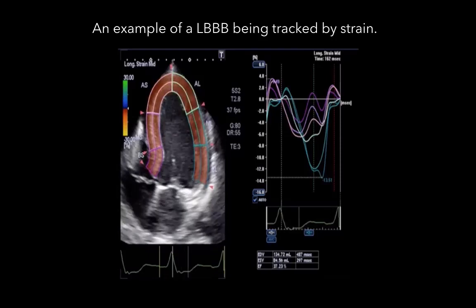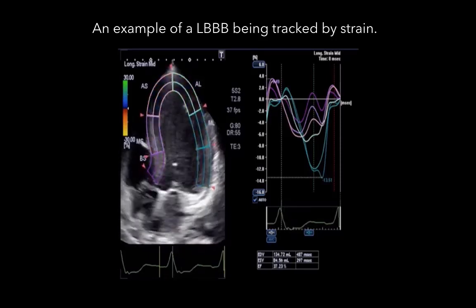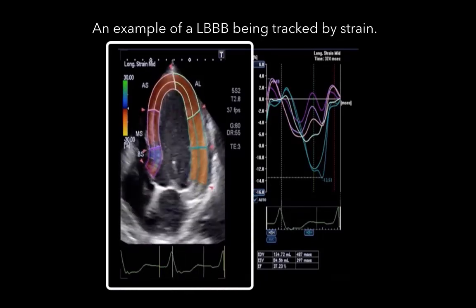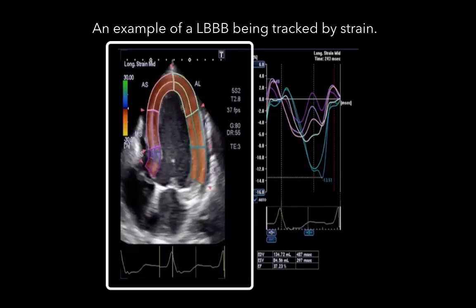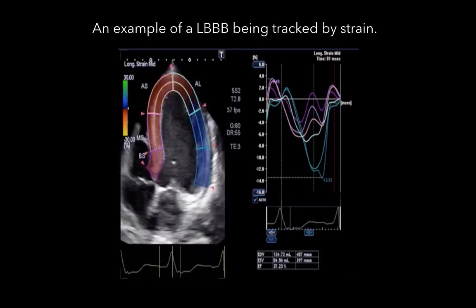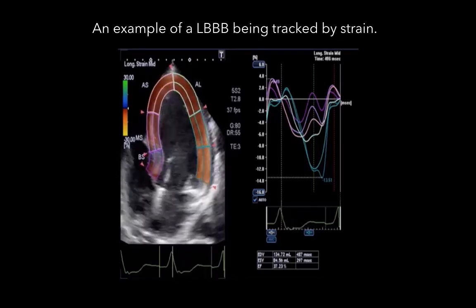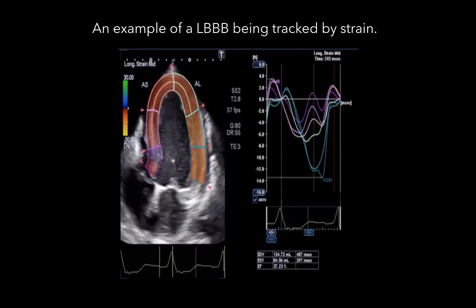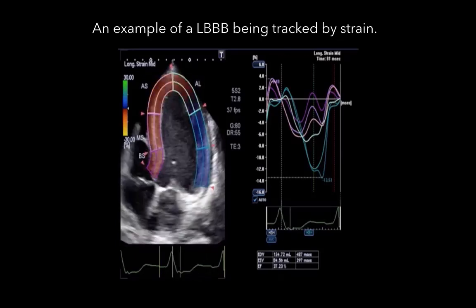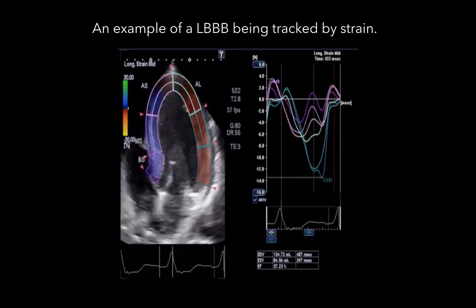This is an example of a left bundle branch block tracked by strain to highlight the pattern of contraction. Note how the red, representing contraction, progresses from the septum on the left to the anterolateral wall on the right. This represents LBBB effects on ventricular contraction rather than true akinesis of the septum. The key message is to always refer back to the patient's rhythm and QRS when interpreting echo, using the monitor or ECG leads on the echo machine.